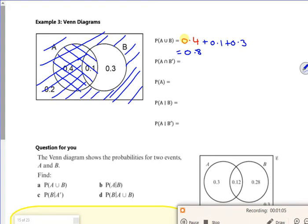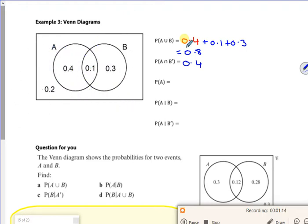The overlapping bit is 0.4 for AND. We're doing Venn diagrams. Some of you might know from school, you might have just added it up. Probability of A is 0.4 plus 0.1 equals 0.5.